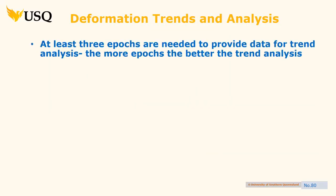If you've got two points that change, you can only form a single line — a vector. It might be in 3D space, but it's just a line. Until you get three points — three epochs — you don't get a trend. It's basic mathematics, but it should be clear that at the beginning of a monitoring program, you might be enticed to take more epochs just to start off a trend pattern.